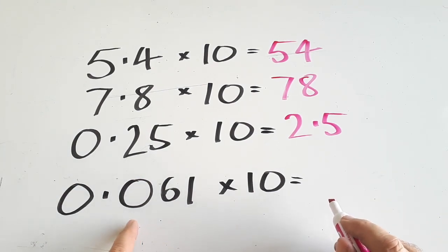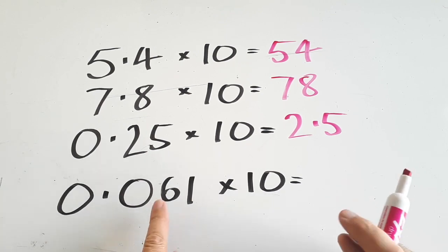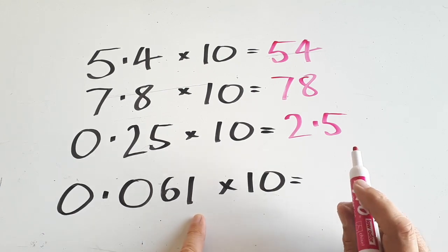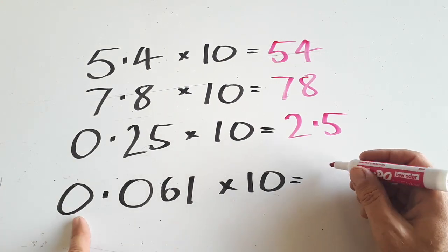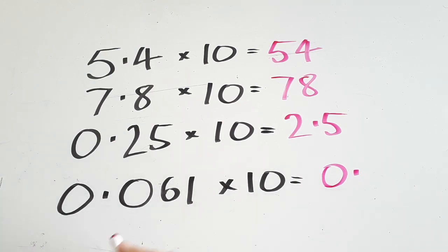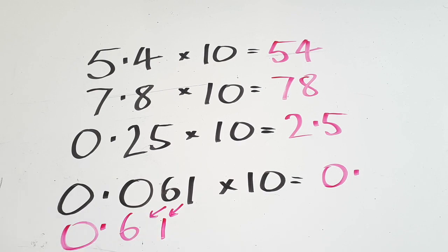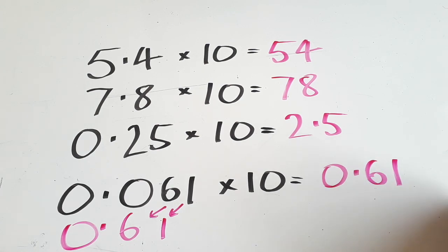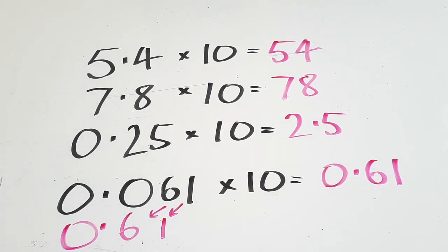Much smaller number down here. 0.061. These are hundredths, quite small, and these are thousandths, very small parts of a number. Multiply by 10 though, still easy. I know that there's going to be nothing in the ones. We're not going that far. But, if I shift this one across here, and this one across here, and work it out pretty quickly, my answer is going to be 0.61. Still much less than 1, but 10 times bigger than 0.061.